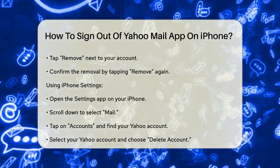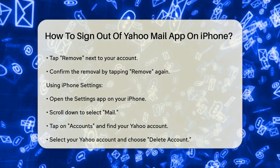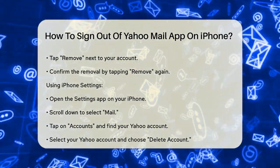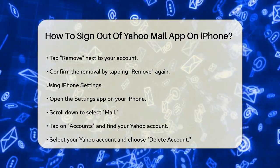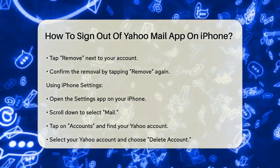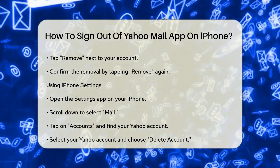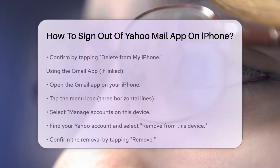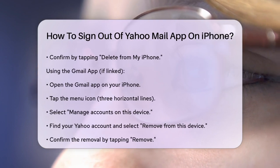Using the iPhone Settings app: another way to sign out is through your iPhone settings. Open the Settings app on your iPhone, scroll down and select Mail, then tap on Accounts and find your Yahoo account. Tap on your Yahoo account and select Delete Account. Confirm by tapping Delete from my iPhone. This method removes the account from your iPhone's mail settings, effectively signing you out.